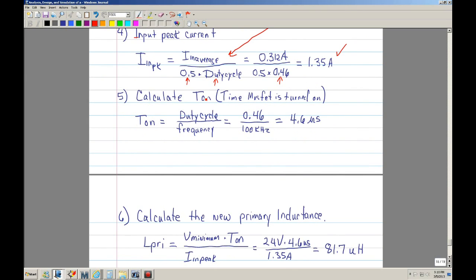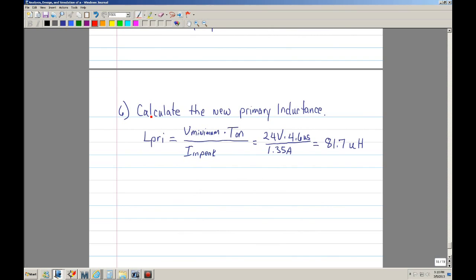The next step is to calculate T-on. T-on is defined as the time that the MOSFET is turned on. And that is duty cycle - again, here's the new number, 0.46 - divided by 100 kilohertz. So T-on is 4.6 microseconds. So now, we can calculate the new primary inductance. Basically, it's V-in times T-on divided by the input peak current. So in this case, we get 24 volts times 4.6 microseconds divided by 1.35 amps, we end up with 82 microhenry. So this is the actual inductance value that I will be striving to achieve when I wind my transformer.